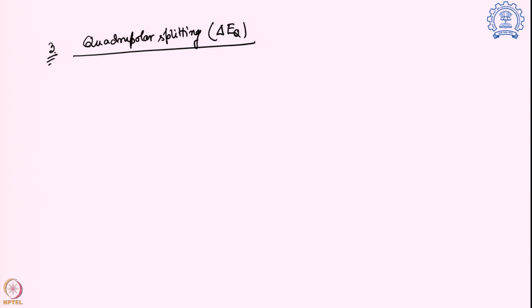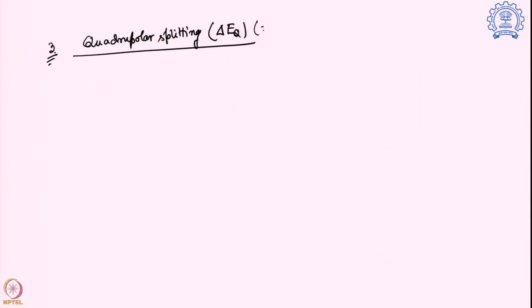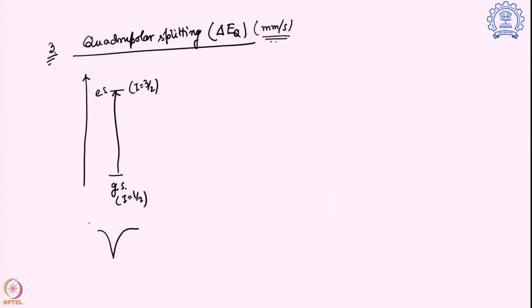The next important factor is quadrupolar splitting, given by the term ΔEQ. The isomer shift and quadrupolar splitting are both expressed in millimeter per second units using the same Doppler velocity scale. For quadrupolar splitting: previously we said the ground state is I = 1/2 and the excited state is I = 3/2. If there is no quadrupolar moment, we expect to see only one band.